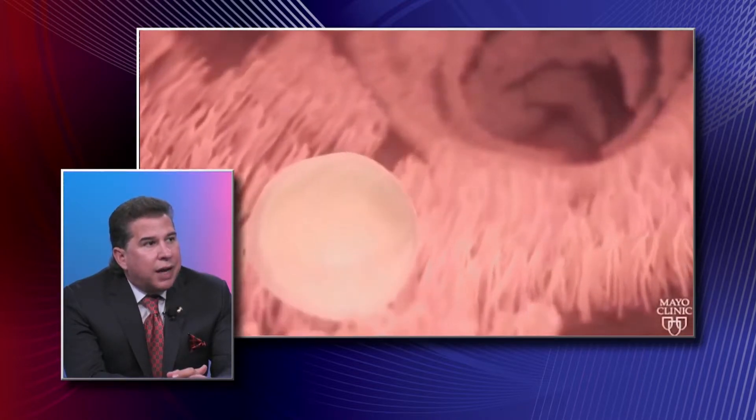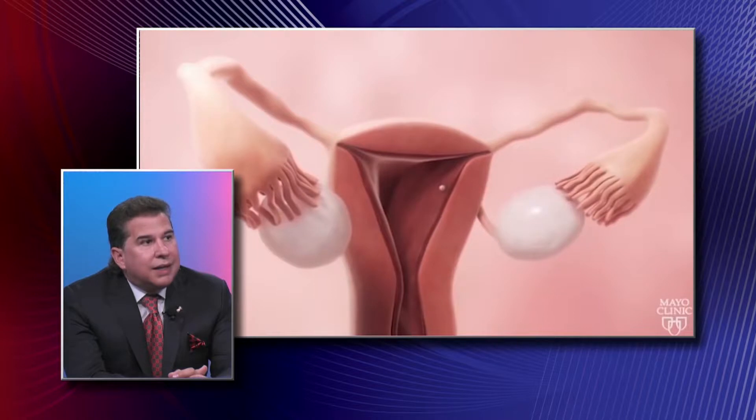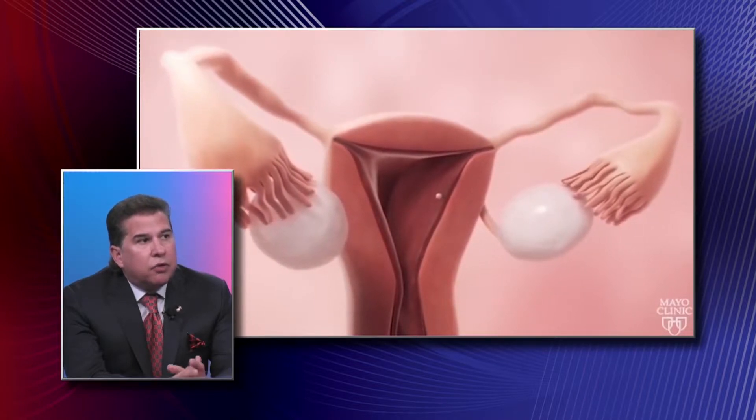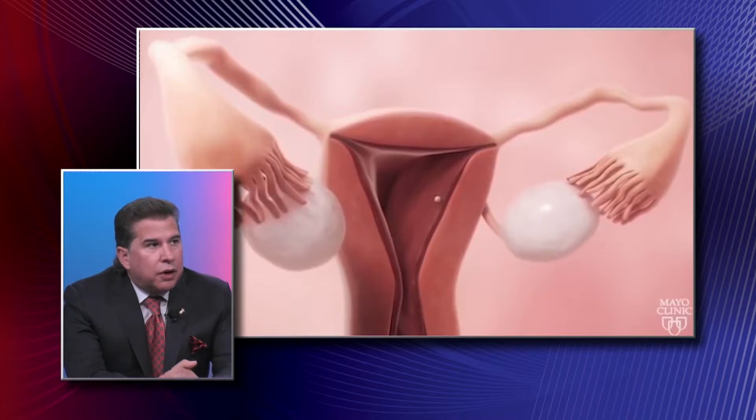Of course, only one sperm — sometimes two in the case of twin pregnancy — will fertilize that egg. Once the egg is fertilized, it has to move through the fallopian tube and then gets implanted into the uterus so it can grow into a human. That's really where implantation happens.